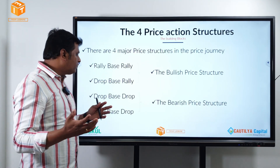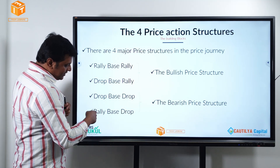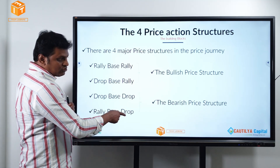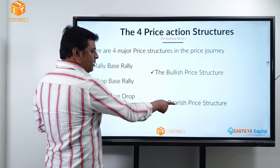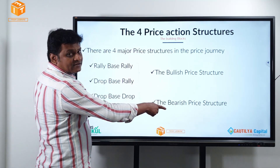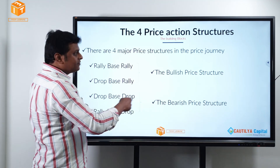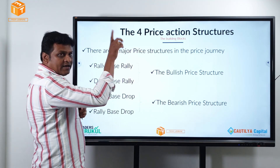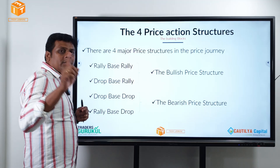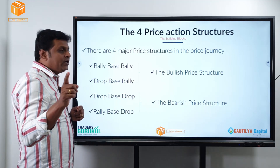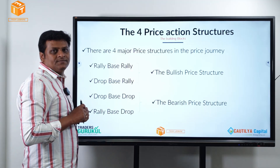Among all the four price structures, RBD is Rally Base Drop, which is a bearish price structure. Rally Base Drop — it is a bearish price structure and also it is a reversal structure.